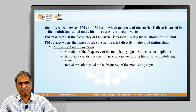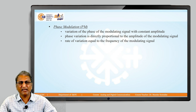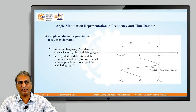In FM, the frequency of the carrier varies with the modulating signal at constant amplitude. The frequency variation is proportional to the amplitude of the modulating signal, and the rate of variation equals the frequency of the modulating signal. Similarly in PM, the phase varies with the modulating signal at constant amplitude — phase variation is directly proportional to the amplitude and the rate of variation equals the frequency of the modulating signal.